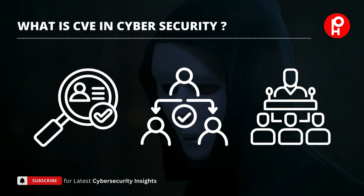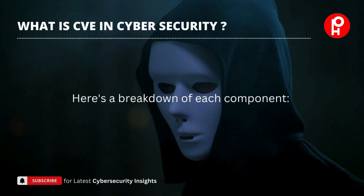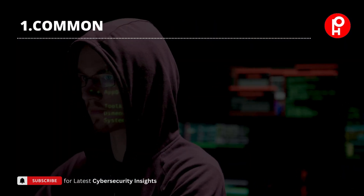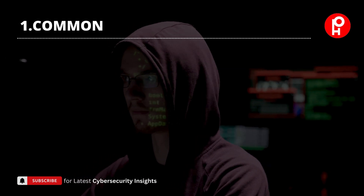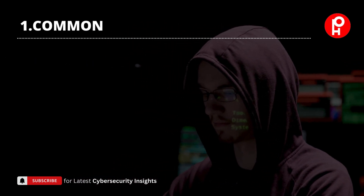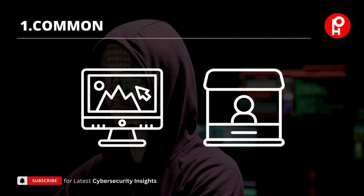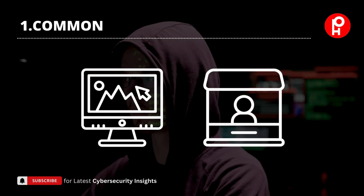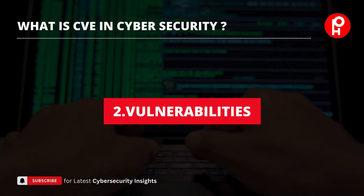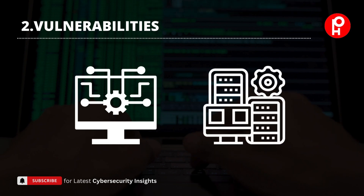We can break down each component. First is 'Common' — this means that the vulnerabilities listed in the CVE system are common to many different software products and vendors, so they are not specific to any one product or organization. Second is 'Vulnerabilities' — these are weaknesses or flaws in software or hardware that can be exploited by attackers.